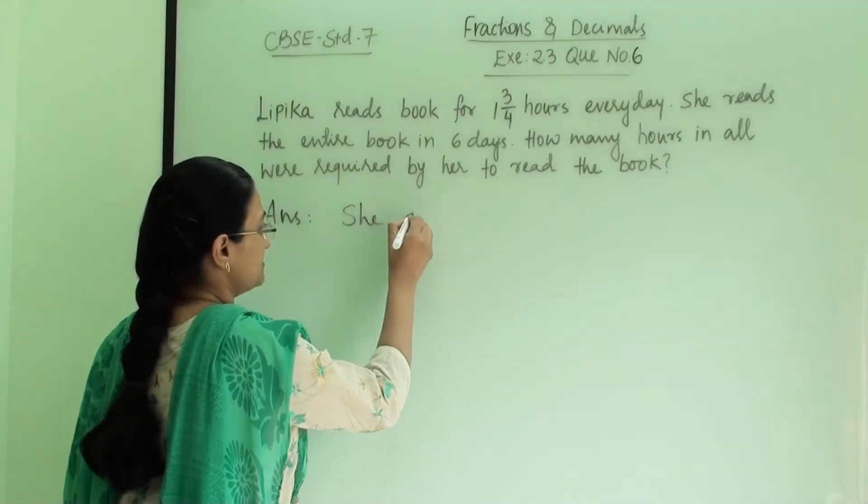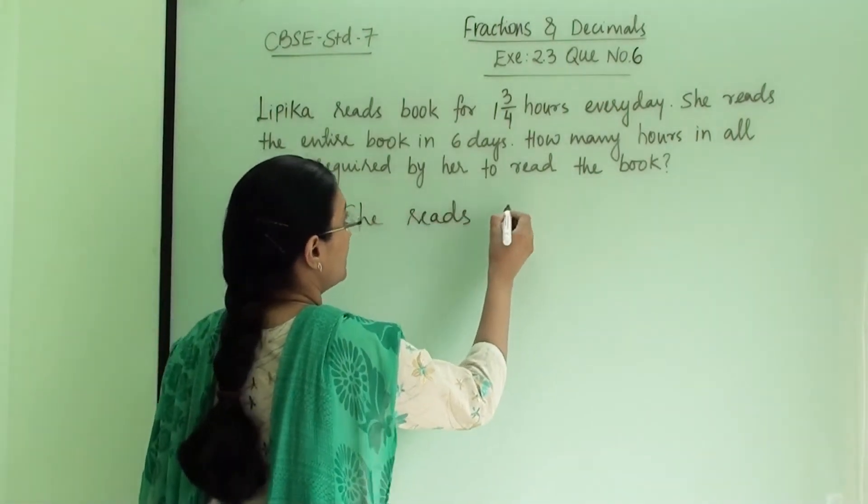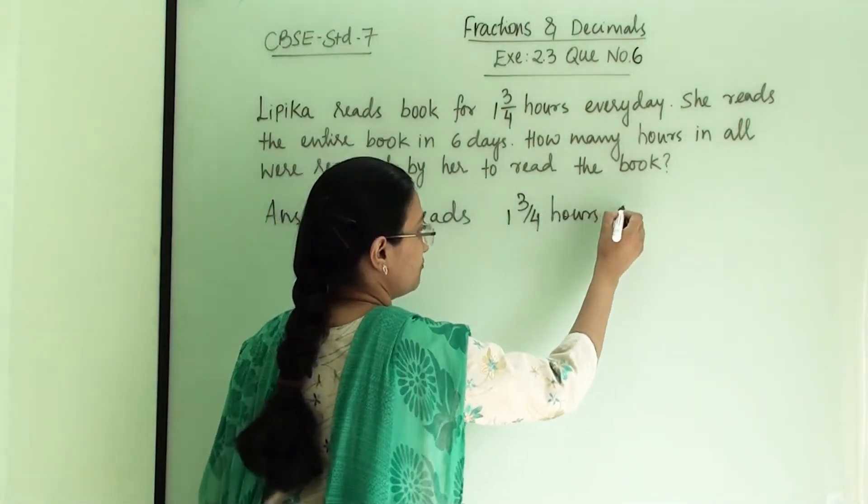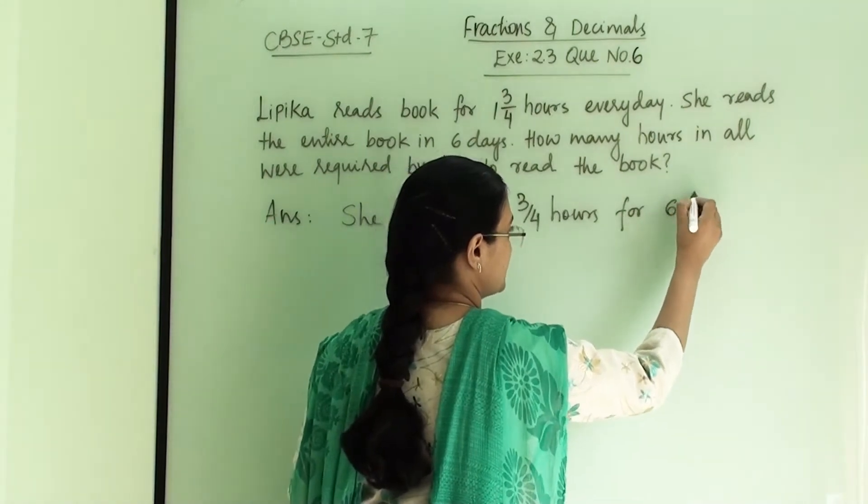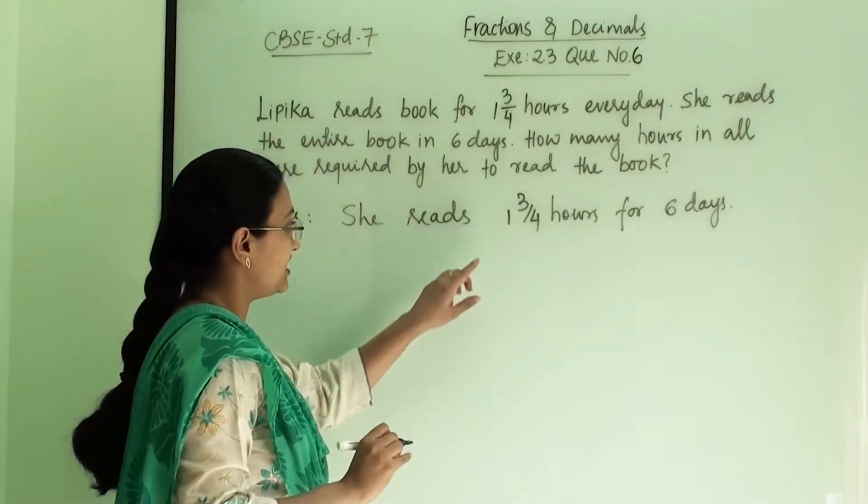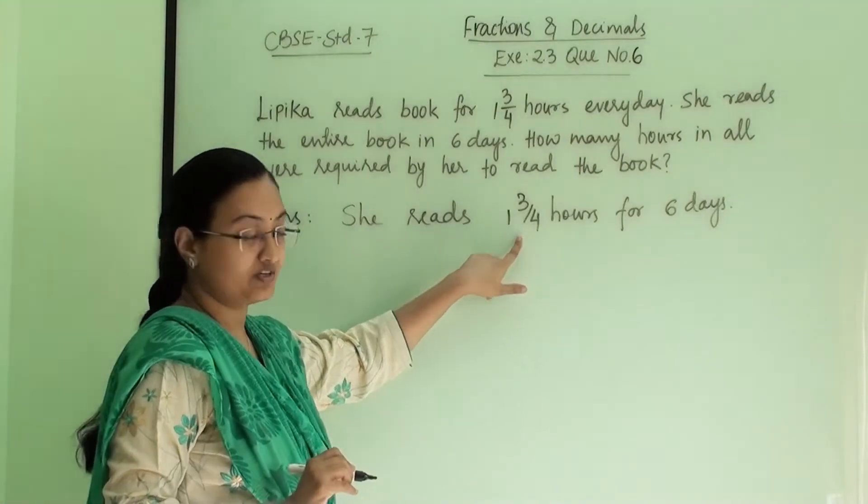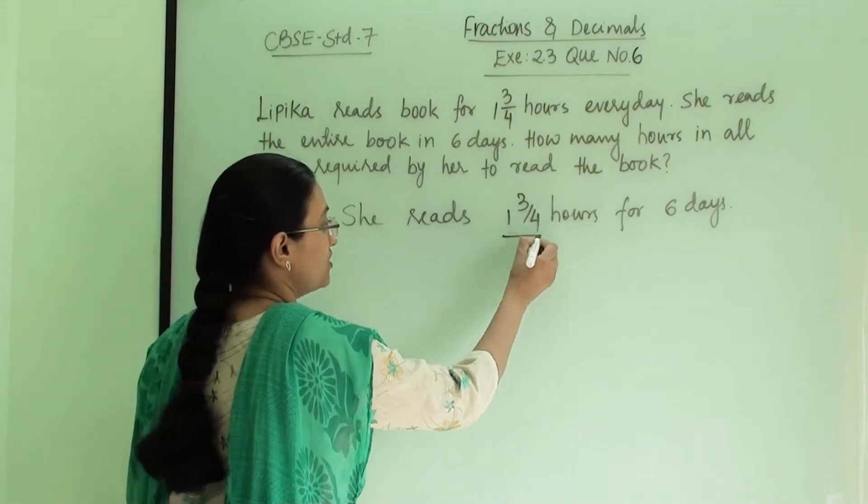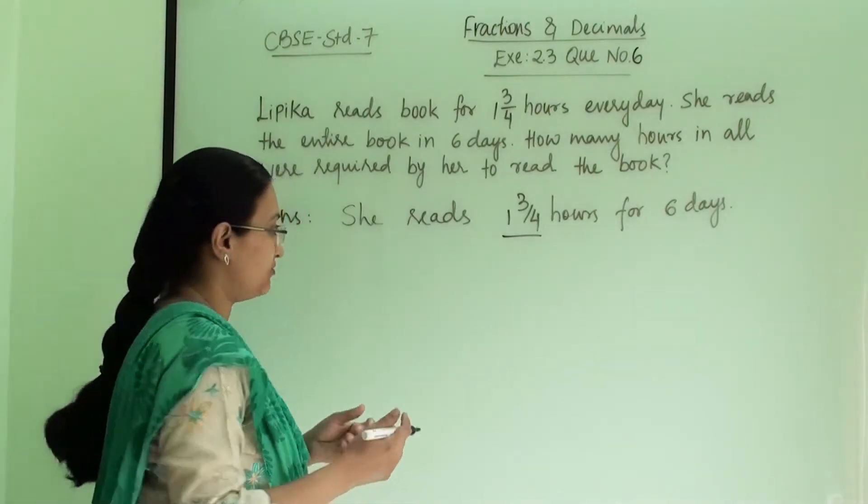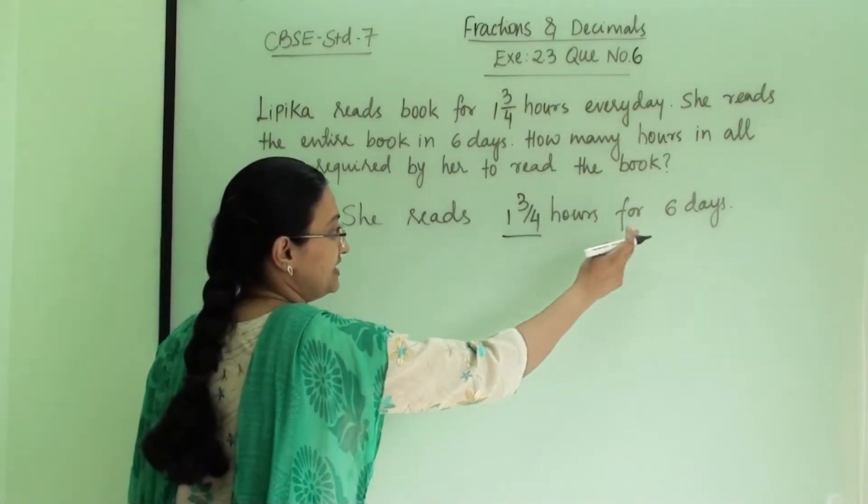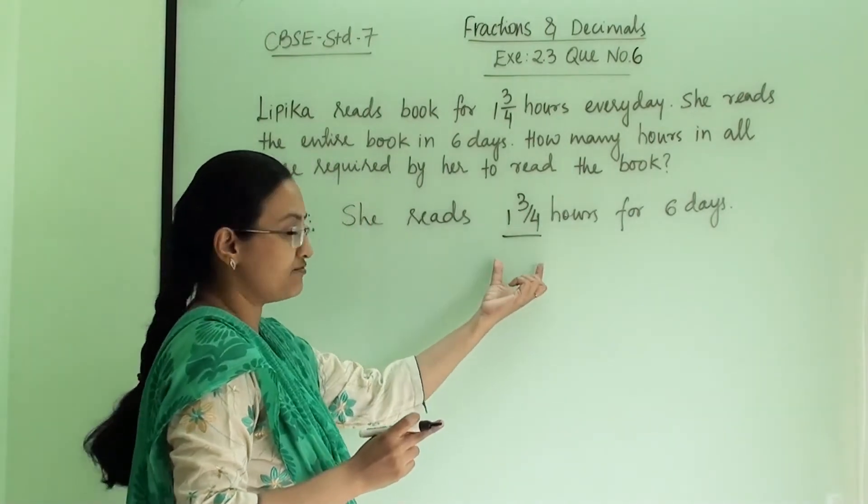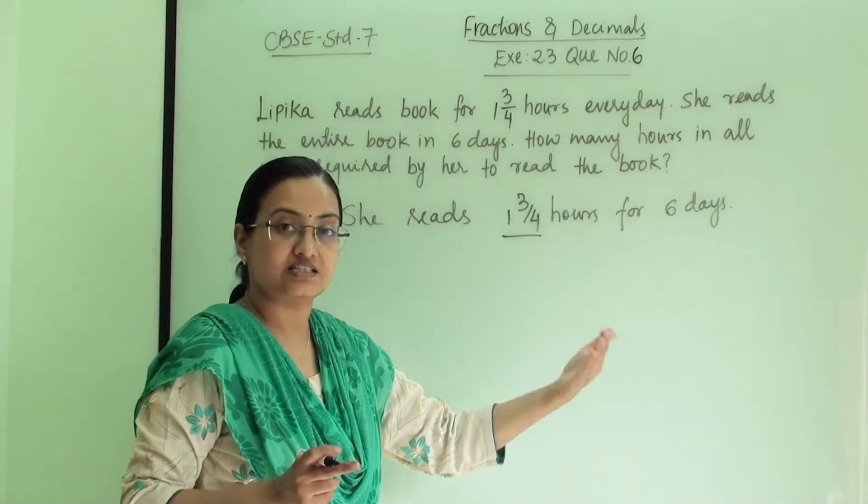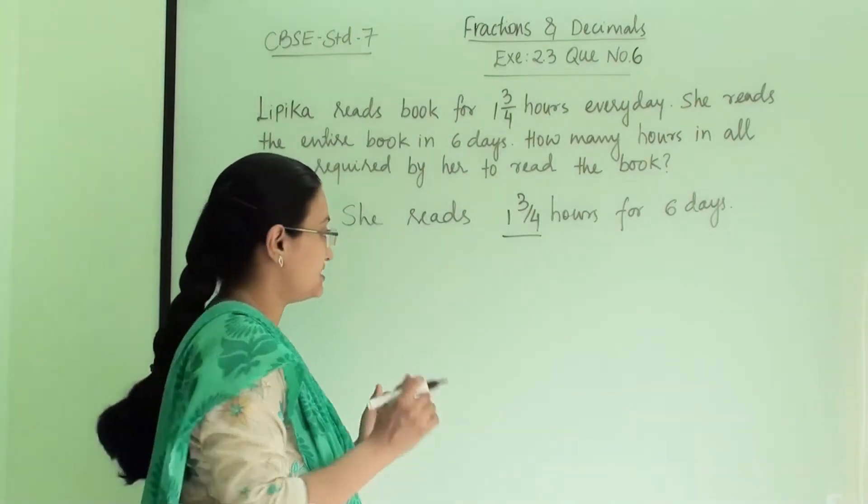She reads 1 3 by 4 hours for 6 days. Now we have to check how many hours in total she read when she reads this much hours for 6 days. So let us first convert this into improper fraction and then we will multiply with 6, because 1 3 by 4 plus 1 3 by 4 we have to add it 6 times, or we can just multiply with 6.